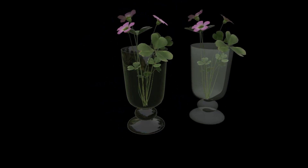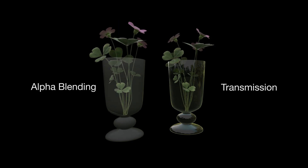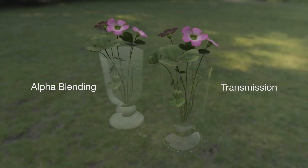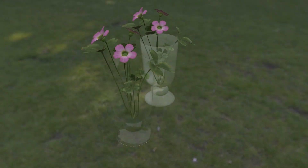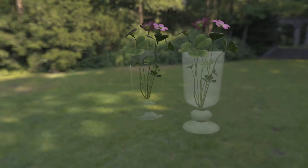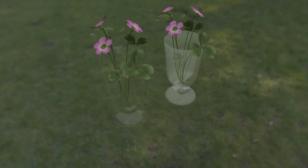Older systems traditionally use alpha blending for this purpose, but alpha blending does not capture reflections from completely transparent materials, such as glass. Reflections are an important factor, enhancing visual realism. With traditional alpha blending, reflections are proportional to the opacity of the surface.